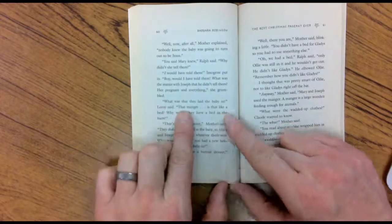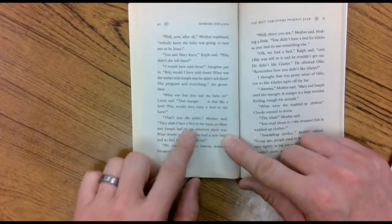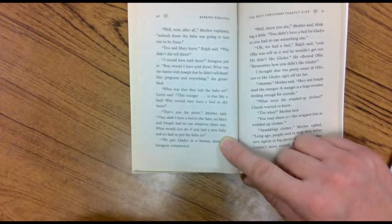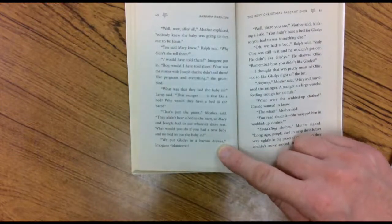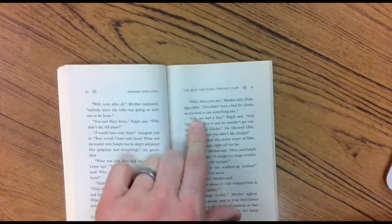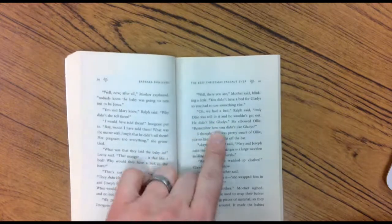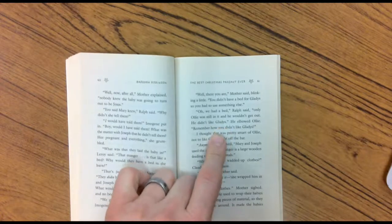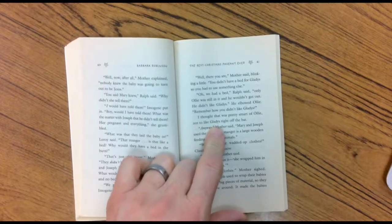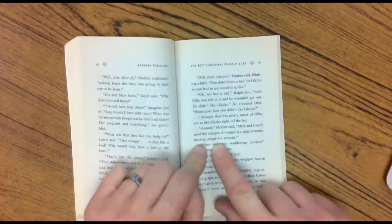Here's the, we need this one for later, so remember this definition. It's that like a bed? Why would they have a bed in a barn? That's just the point, Mother said. They didn't have a bed in a barn, so Mary and Joseph had to use whatever there was. What would you do if you had a new baby and no bed to put him in? We put Gladys in the bureau drawers, Imogene volunteered. Well, there you are, Mother said, blinking a little. You didn't have a bed for Gladys, so you had to use something else. Oh, we had a bed, Ralph said, only Ollie was still in it and he wouldn't get out. He didn't like Gladys. He elbowed Ollie. Remember how you didn't like Gladys? I thought you were pretty smart. I thought that was pretty smart of Ollie not to like Gladys right off the bat.